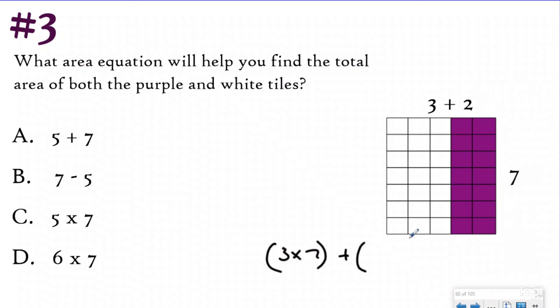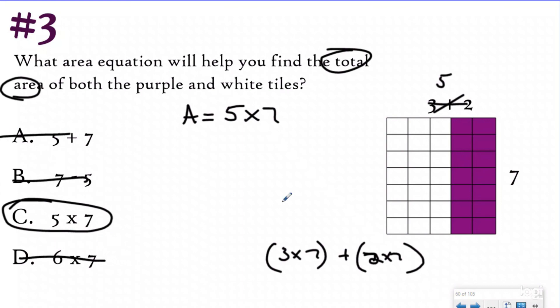I could figure out that this is 21, that's 14, add them together to find my total area of 35. But these equations are not written in distributive property format. So what they want us to do is know, if I want to find the total area of both the purple and white tiles, I could compose this length into five units. And then my area formula would be five groups of seven, which matches C. So my answer for this one would have to be C.